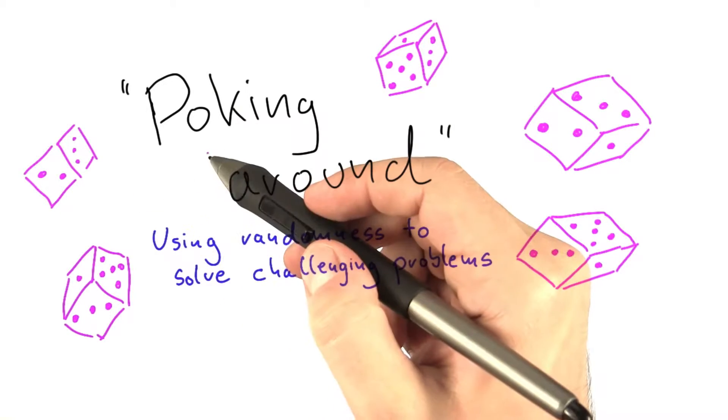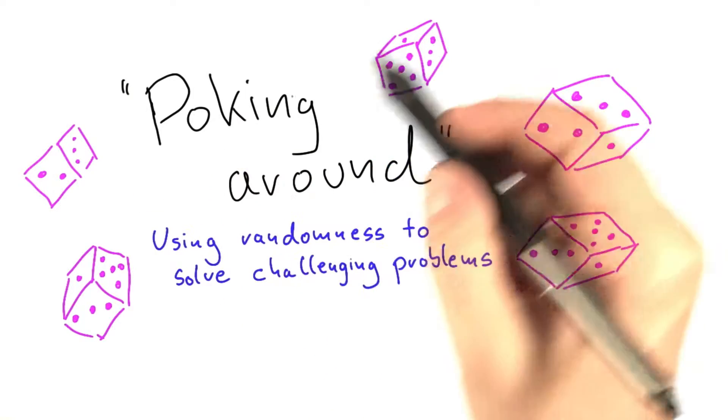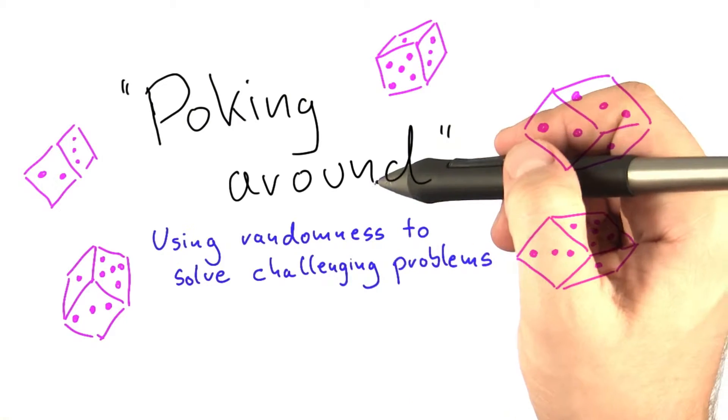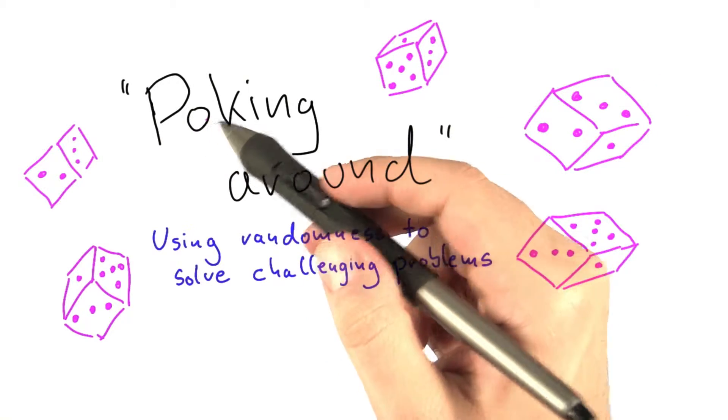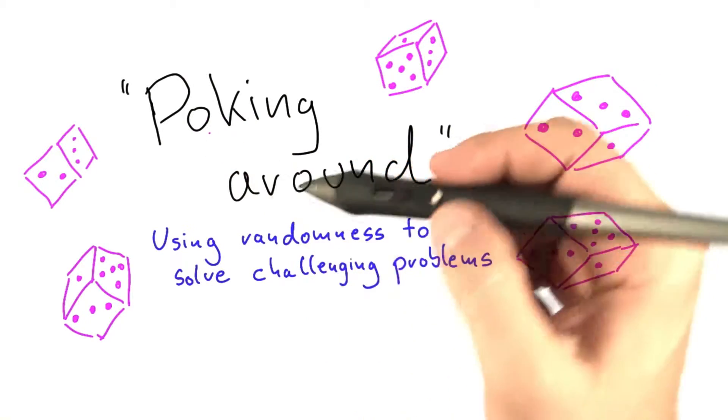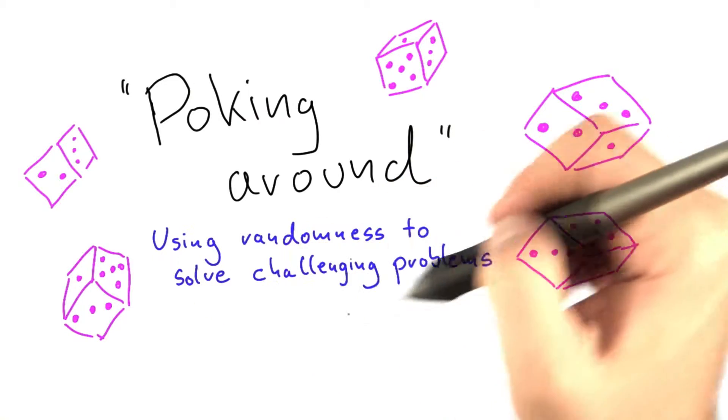So we have talked about using search trees, preprocessing, and approximation to solve NP-complete problems. But there's one technique that we haven't yet talked about, and that is using randomness to solve challenging problems.